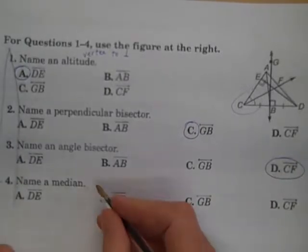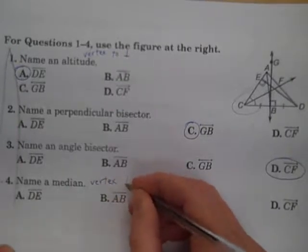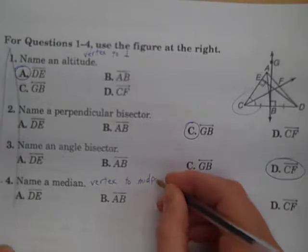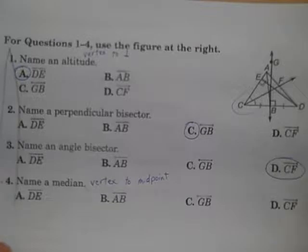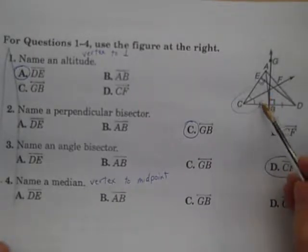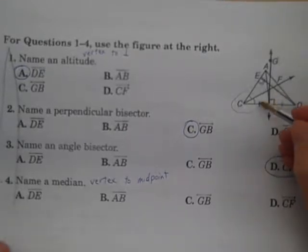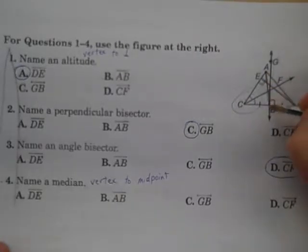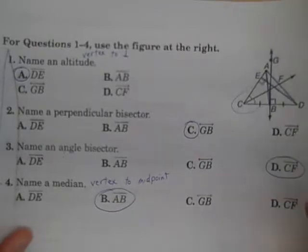And then name a median. A median goes from vertex to midpoint on the opposite side. These terms are important in order to be able to solve the problems that you need to do here. So I need a midpoint, which looks like B, because I see this line here and this line here, so B is the midpoint of CD.